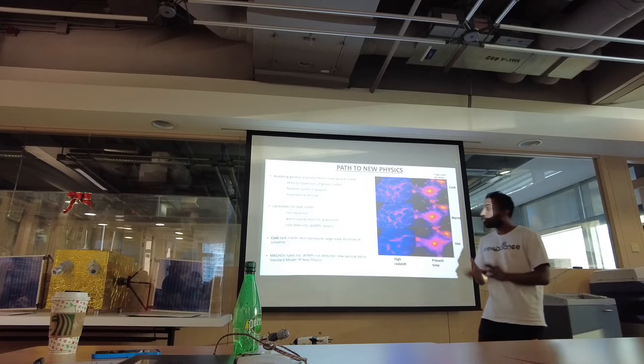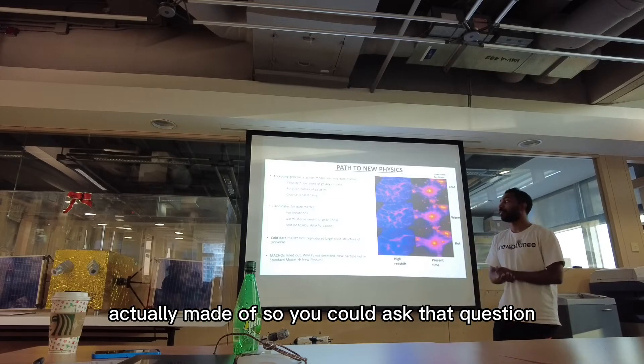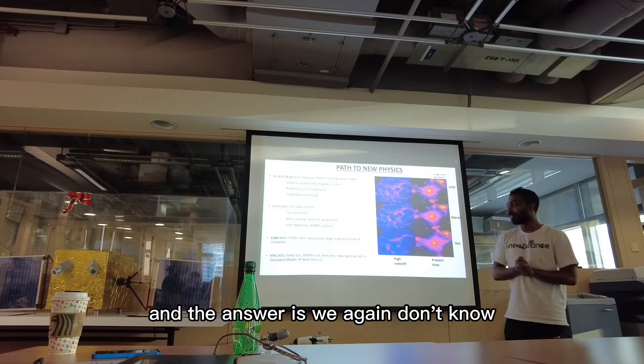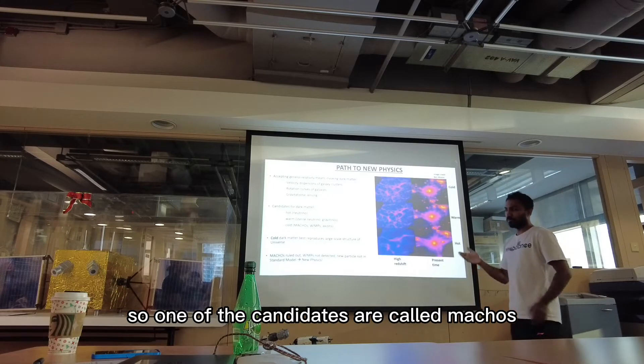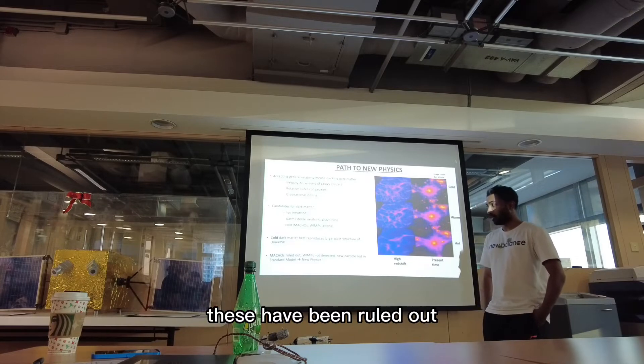Okay, so what? What is cold dark matter actually made of? So you could ask that question, and the answer is we again don't know. So one of the candidates are called MACHOs, which are massive objects like black holes. These have been ruled out.